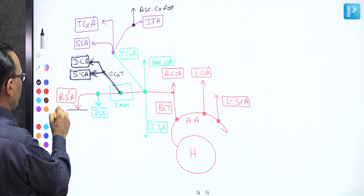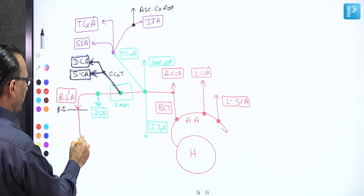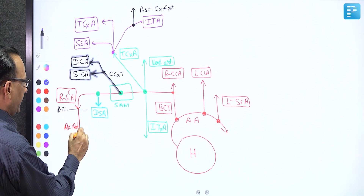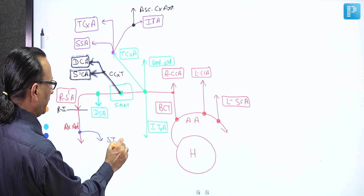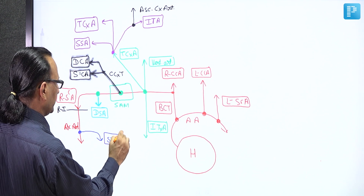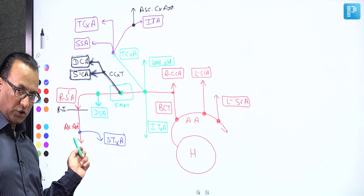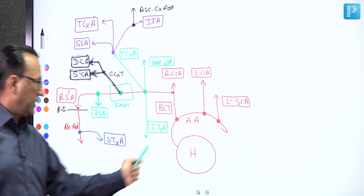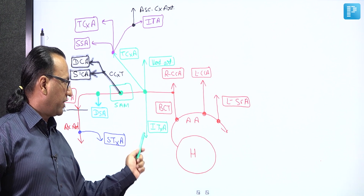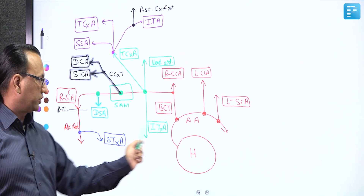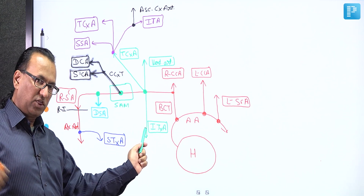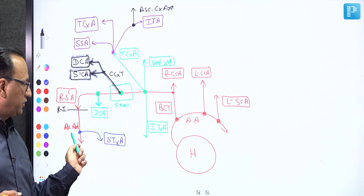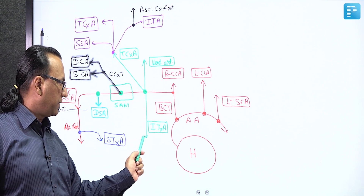As the subclavian artery crosses the outer border of the first rib, it enters the axilla and becomes the axillary artery. The first part of the axillary artery gives the superior thoracic artery to supply the thorax region — this option was also in our question. The superior thoracic artery comes from the first part of the axillary artery, whereas the internal thoracic artery comes from the first part of the subclavian artery. Both supply the thorax region and the mammary gland.